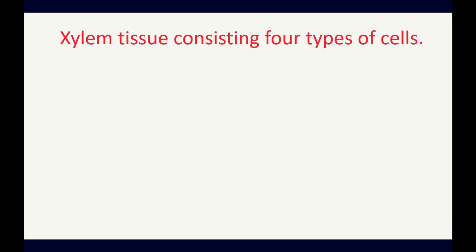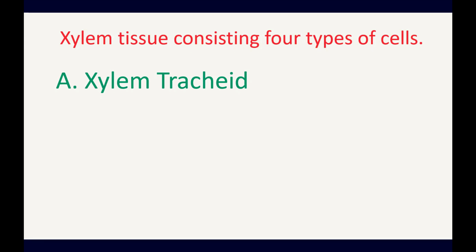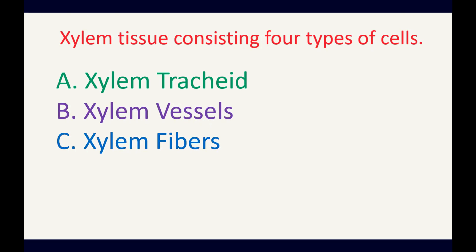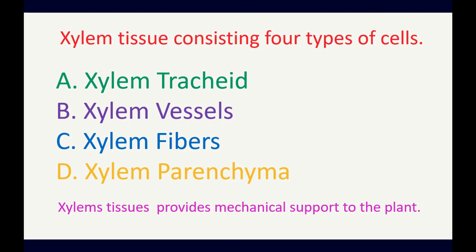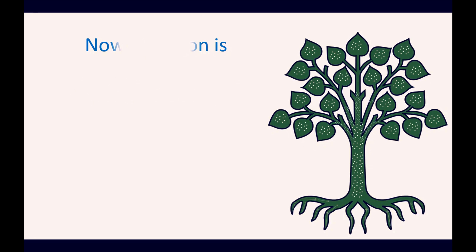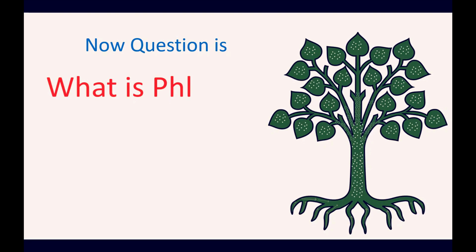Xylem tissue consists of four types of cells: (a) xylem tracheids, (b) xylem vessels, (c) xylem fibers, and (d) xylem parenchyma. Xylem tissue also provides mechanical support to the plant.